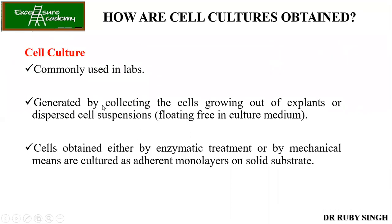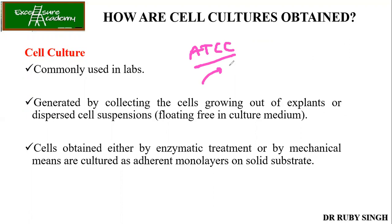Cell culture is the method commonly used in labs. If your lab doesn't have the cells, there is something called ATCC — American Type Culture Collection. You can pay a certain amount and buy the cells. Once you buy the cells, you can keep them for many generations. Or if you don't want to buy, you can ask other labs. The media is also easy to prepare. Most research, like working in a cancer lab, uses this cell culture method.